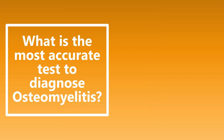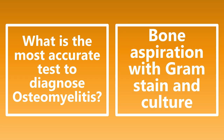What is the most accurate test to diagnose osteomyelitis? The most accurate test is going to be a bone aspiration with gram stain and culture. Osteomyelitis is typically a clinical diagnosis at first, and that's usually sufficient to start antibiotics. But the most accurate test is an aspiration and gram stain and culture to actually see that bacteria growing within the bone sample.